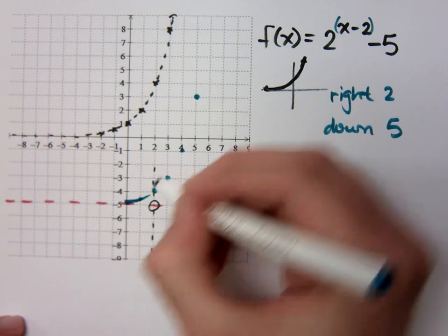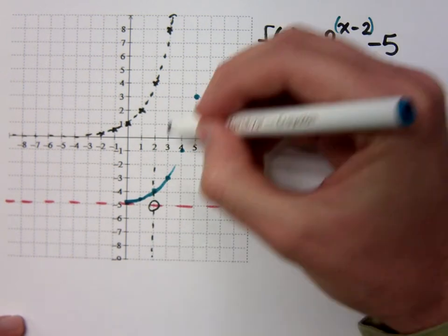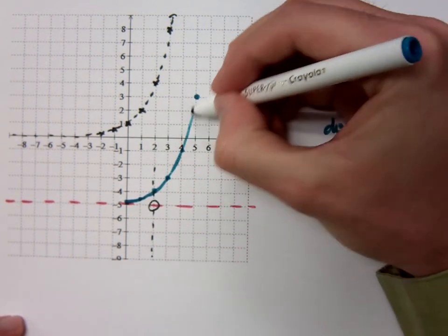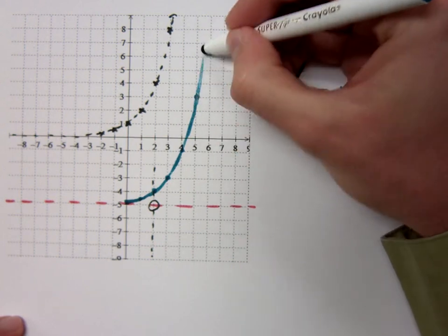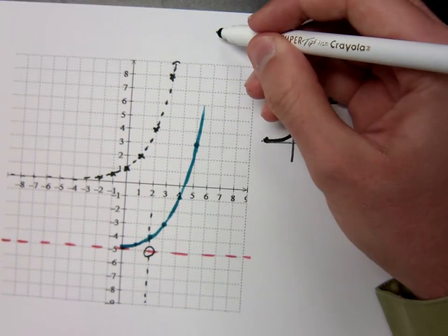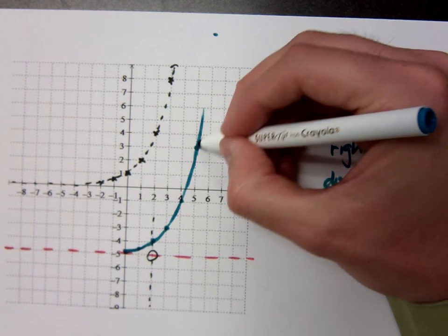So connect these dots. Connect these points. See, by having this point up here, I know where I'm aiming. So I'm not going to go over here to the right.